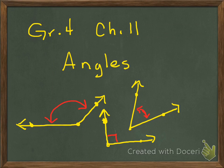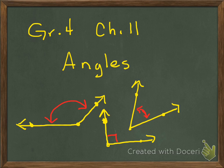Welcome back, boys and girls. We're now going to take a look at Grade 4, Chapter 11. Grade 4, Chapter 11 is all about angles. We learned an awful lot in Chapter 10 about angles, and we're going to continue learning more. The first question I'm going to ask you is: how can you relate angles and fractional parts of a circle? We're going to do a little investigation. Let's get started.